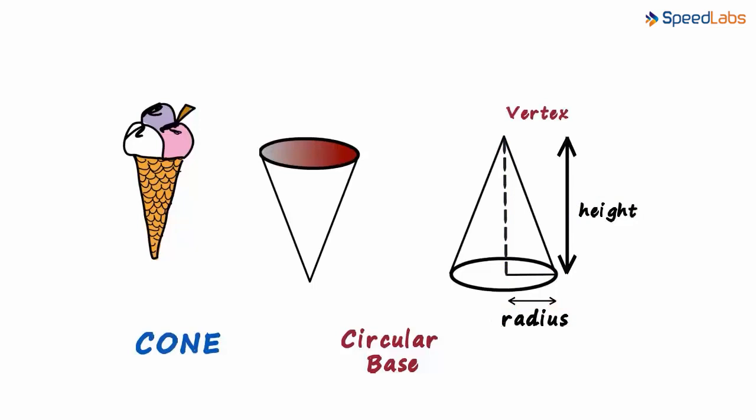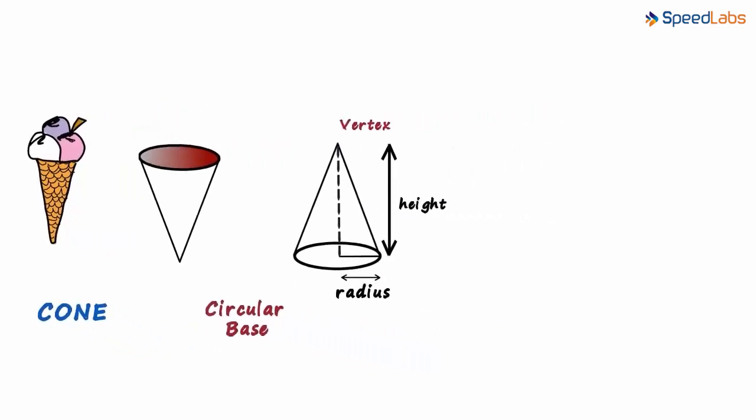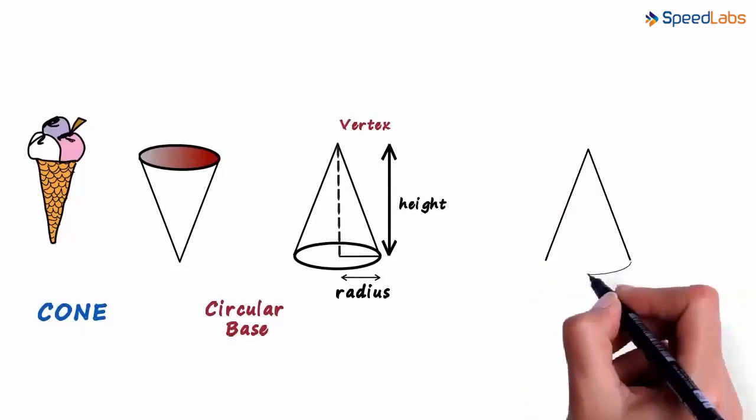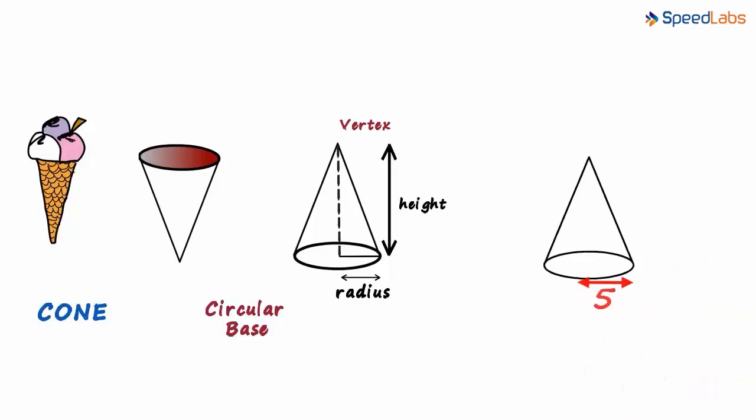What does this mean? Say you are asked to draw a cone which has the radius of its circular base 5 centimeters. So you draw it like this. Well some of you may draw it like this. Or maybe like this.